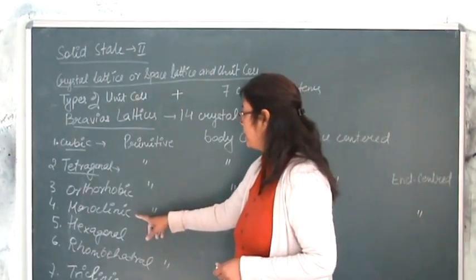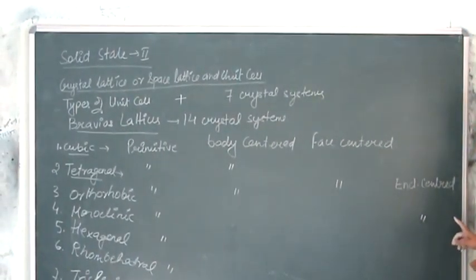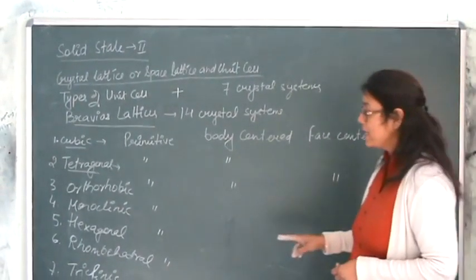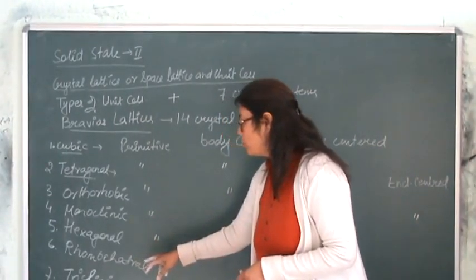Monoclinic shows only 2 arrangements, primitive and end centered, and the rest 3, that is hexagonal, rhombohedral and triclinic, they all show only primitive kind of arrangement.